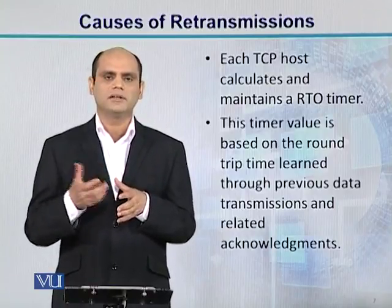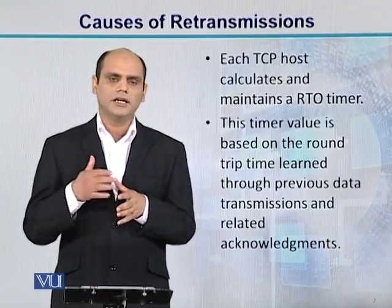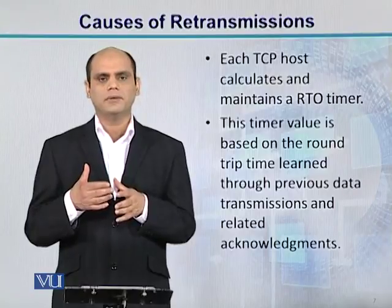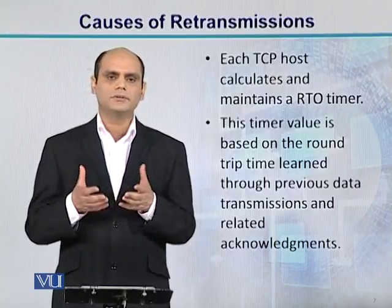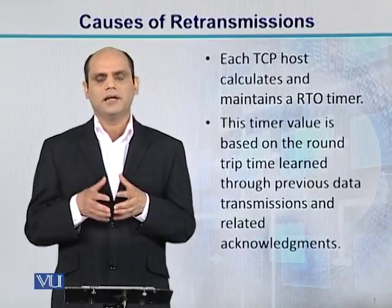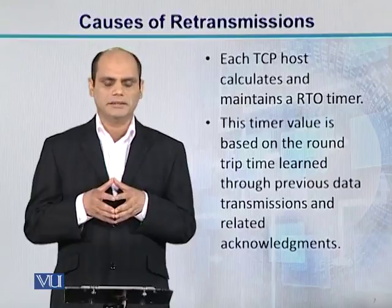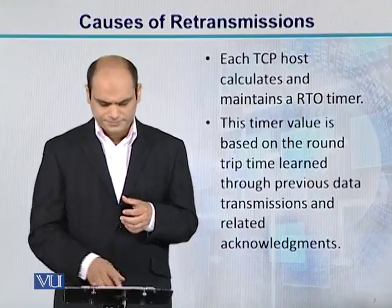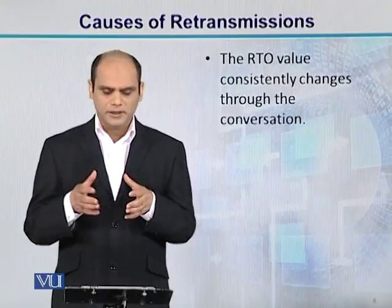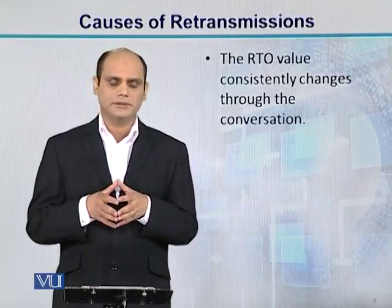Agar yeh packet to packet vary kar rahi hogi, toh iska matlab kya hoga? Jo round trip time hai, woh bhi vary karega. Toh jab round trip time vary kar raha hai, toh aapka jo RTO hai — jo retransmission timeout ki value hai — woh bhi vary karni chahiye. Use static nahi hona chahiye; ek constant value, let's say 5 milliseconds, nahi hona chahiye. Yeh vary karta rahega, aur yeh depend karega aapki jo round trip time hai, jo current uski situation hai, uske upar. Toh TCP kya karta hai: yeh jo round trip time hai usko monitor karta rehta hai, aur aapne RTO ko update karta rehta hai. So the RTO value consistently changes through the conversation, aur yeh ek value nahi hoti.